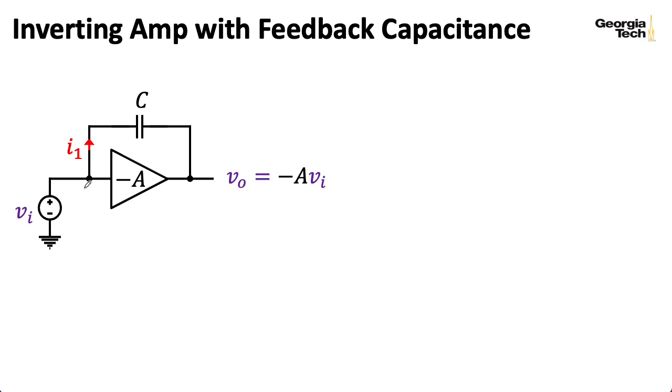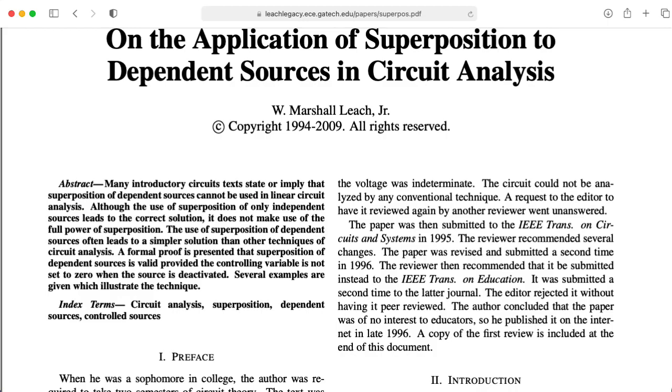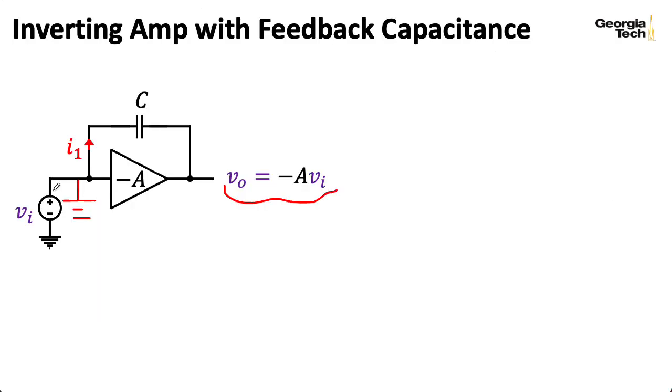Now, on the other hand, let's imagine zeroing this out here. And then we have VO. Now VO is minus AVI. Now that seems weird, because I just said, hey, I just zeroed VI. But remember, we don't actually solve for the variables in the circuit until we have all the contributions included.